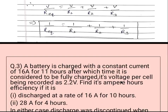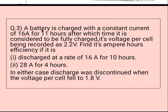Moving to question number three, which is from battery charging and discharging. A battery is charged with a constant current of 16 ampere for 11 hours, after which time it is considered to be fully charged, its voltage per cell being recorded as 2.2 volt. Find its ampere-hour efficiency if: first, it is discharged at a rate of 16 ampere for 10 hours; and second, 28 ampere for 4 hours. In either case, discharge was discontinued when the voltage per cell fell to 1.8 volt.